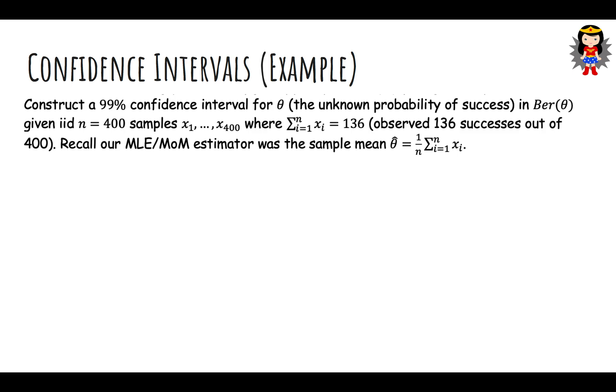Let's do one more example. We want to construct a 99% interval for theta for Bernoulli theta, when we have 400 samples and observed 136 successes or heads out of 400 flips. Our MLE and method of moments estimators were both the sample mean. 136 over 400 is 0.34, so that's our point estimate, our single number estimate.